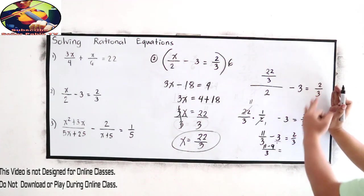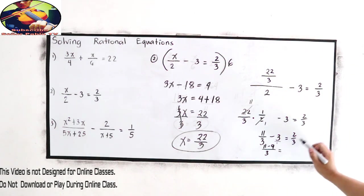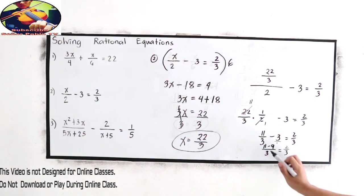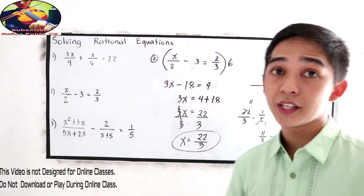Is equal to just copy the right part of the equation which is 2 thirds. 11 minus 9, that is 2 over 3, which is the same. 2 over 3 is equal to 2 over 3. That means our value for x, 22 over 3, is correct.